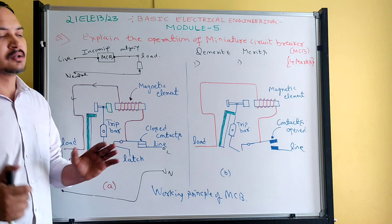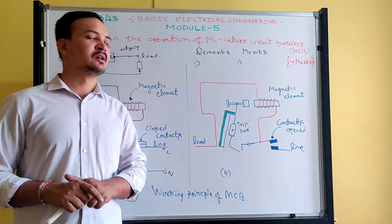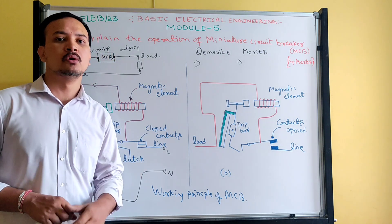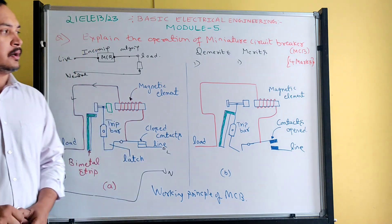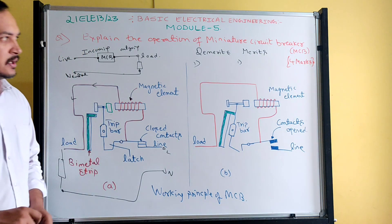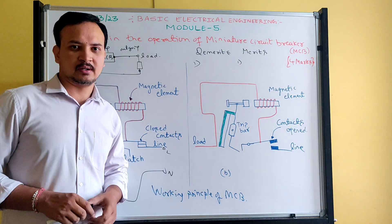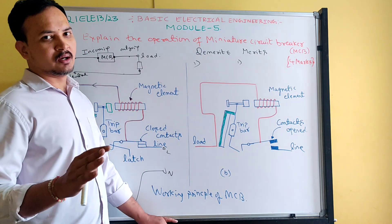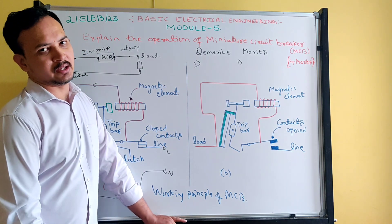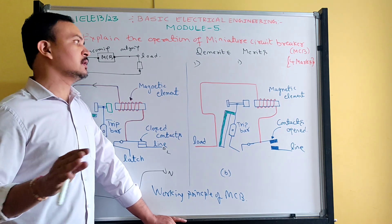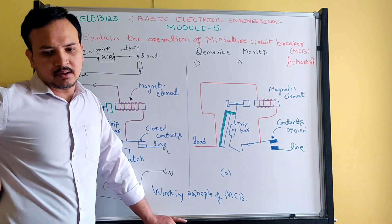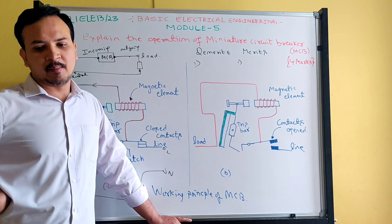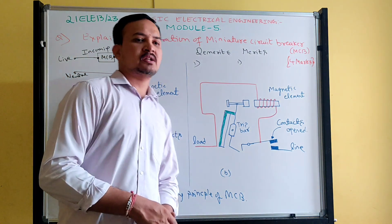Another demerit on the customer side is that MCB cost is higher than fuse. MCB is costlier compared to fuse. One more demerit is it cannot protect against earth faults. MCB cannot protect earth faults. Under such condition it is not protecting — only overloading and short circuit protection is what MCB is recommended for. MCB can be used in residential, commercial buildings, and also in industry.